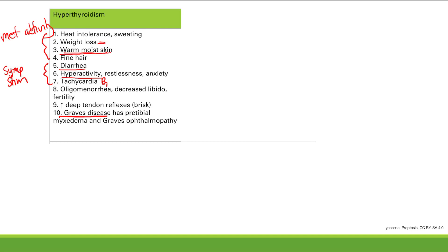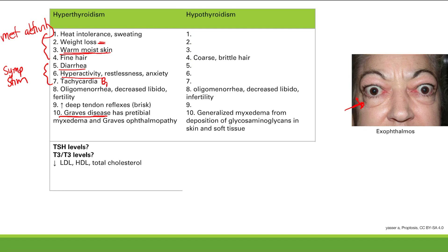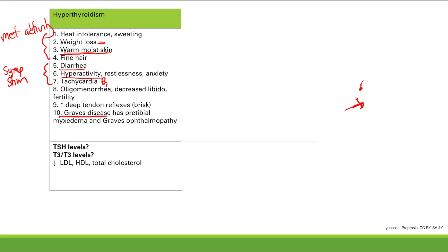Graves' ophthalmopathy means periorbital edema and exophthalmos — protrusion of the eyeballs due to increased volume of tissue behind the eyeballs. For lab values in hyperthyroidism: T3 and T4 are increased, which feeds back to inhibit TSH, so TSH is decreased. Decreased TSH is very characteristic of hyperthyroidism. Additionally, lipid and cholesterol levels are generally decreased.